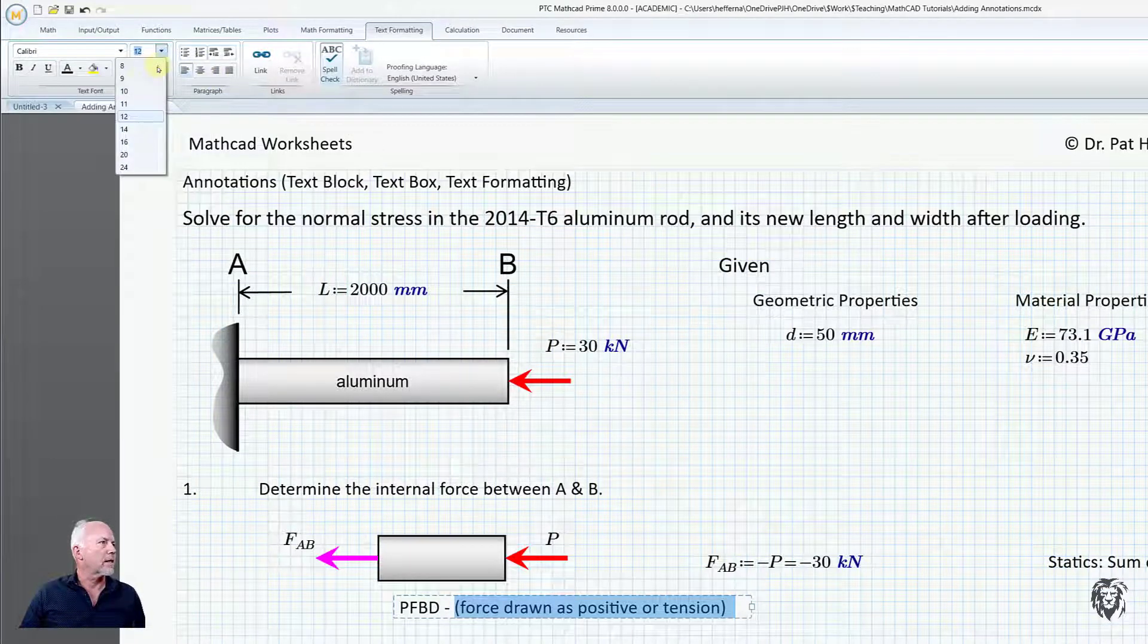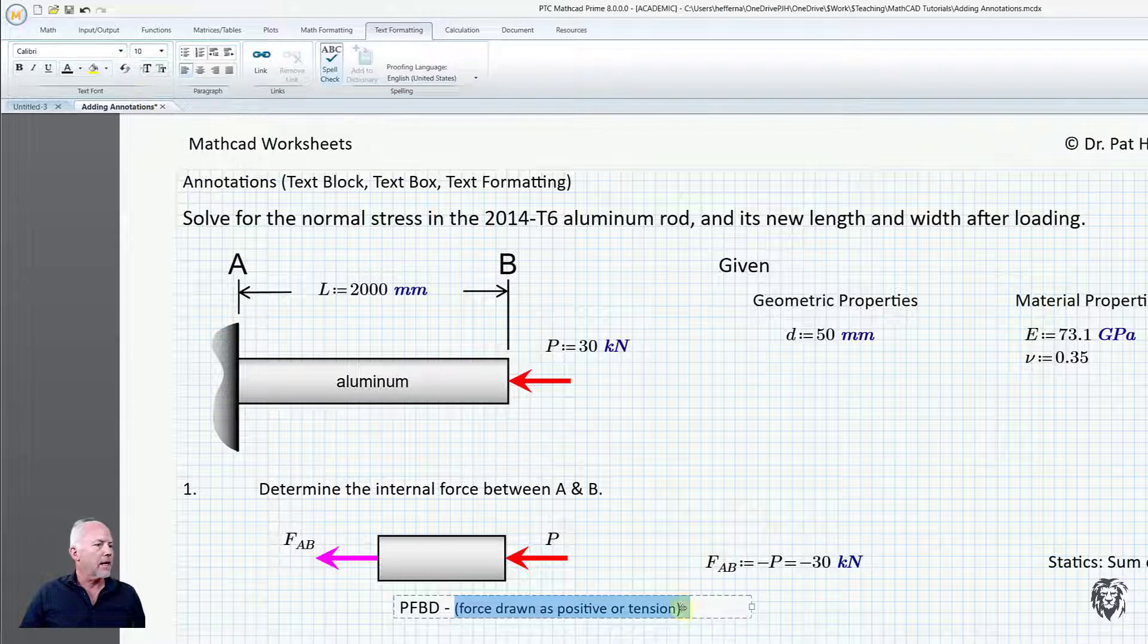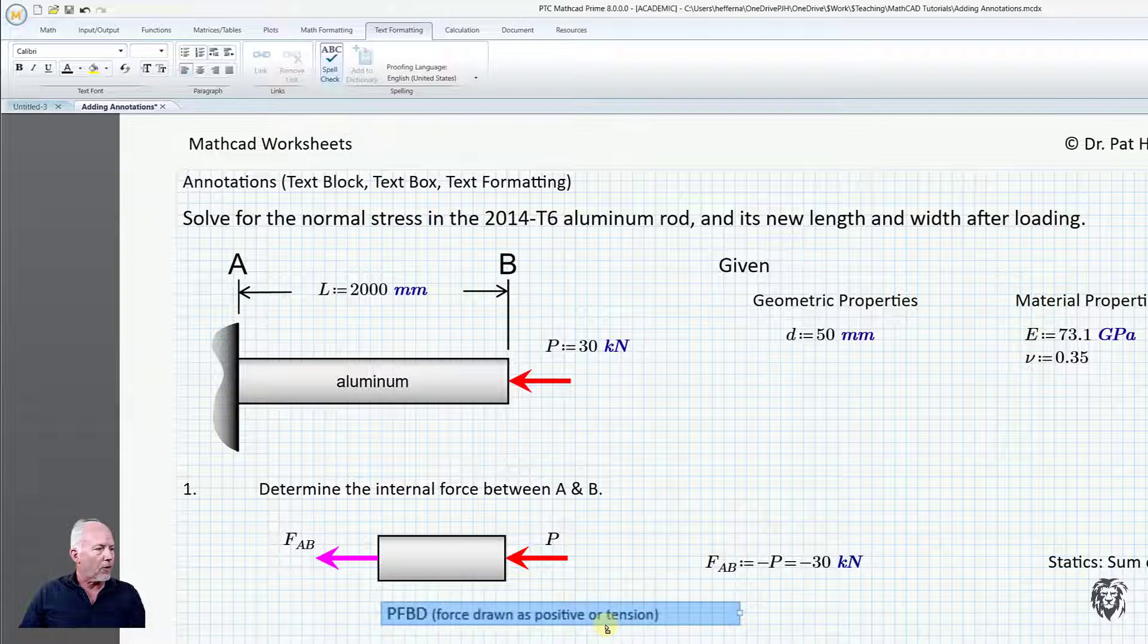Whether it's justifying left center or right which can be really useful. In this case I just want to bring this down to 10 points and that looks better because it just explains the partial free body diagram slightly. Now I can move this around. I can put it anywhere I want.